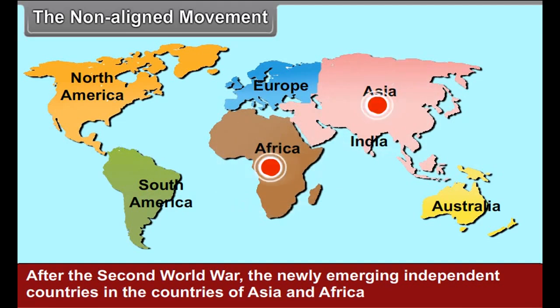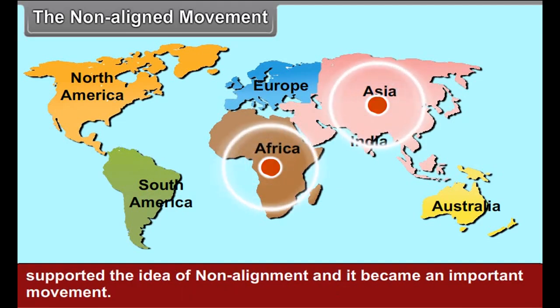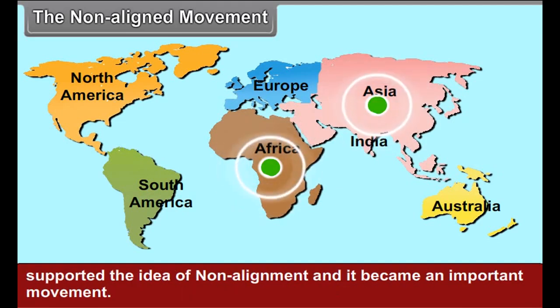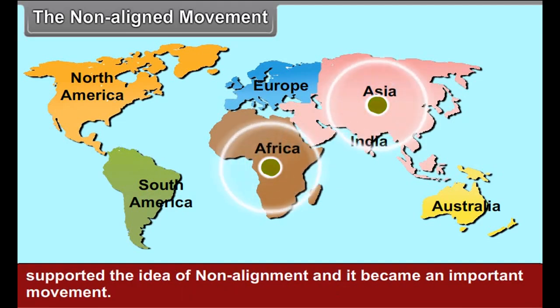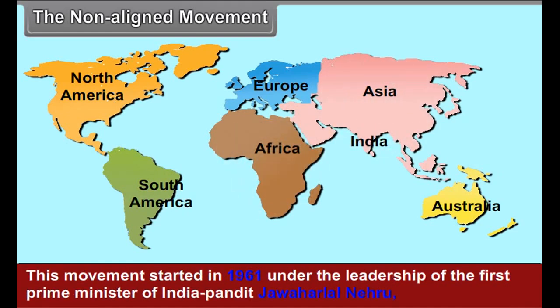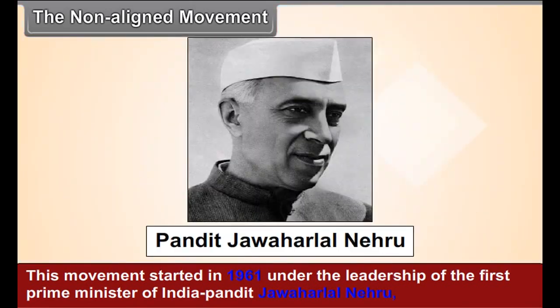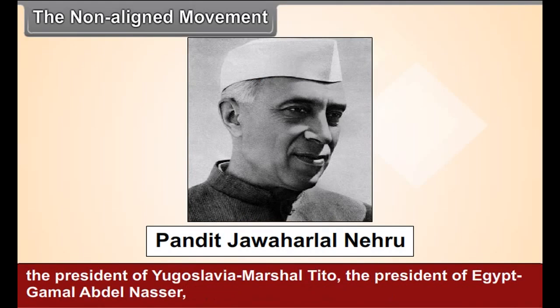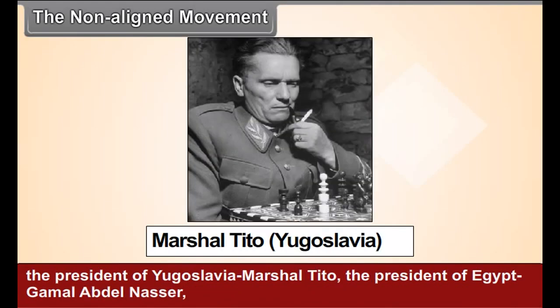Pandit Nehru clearly put forward India's stand by stating that India would not join any camp as she did not wish to be dominated by anyone. Rather, she hoped for cooperation from all countries. This stand of independence and peace taken by India in the context of the Cold War is known as the policy of non-alignment, which is another remarkable feature of India's foreign policy.